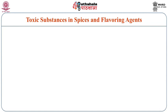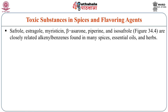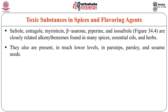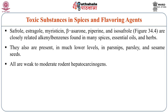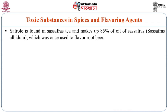There are toxic substances present in different kinds of spices and flavoring agents. These include safrole, estragole, myristicin, beta-asarone, piperine and isosafrole, which are closely related alkyl benzenes found in many spices, essential oils and herbs. They are also present in much lower levels in parsnips, parsley and sassafras seeds. They are all weak to moderate rodent hepatocarcinogens.